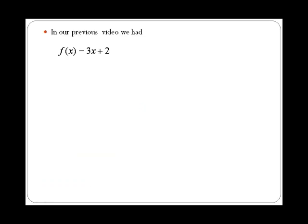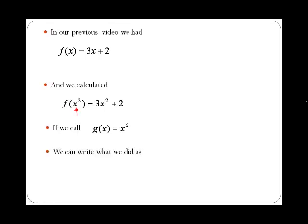In our previous video, we had a function f of x equals 3x plus 2, and we calculated f of x squared, which was equal 3x squared plus 2. If we call g of x to the function inside, x squared, then we can write what we did like this.